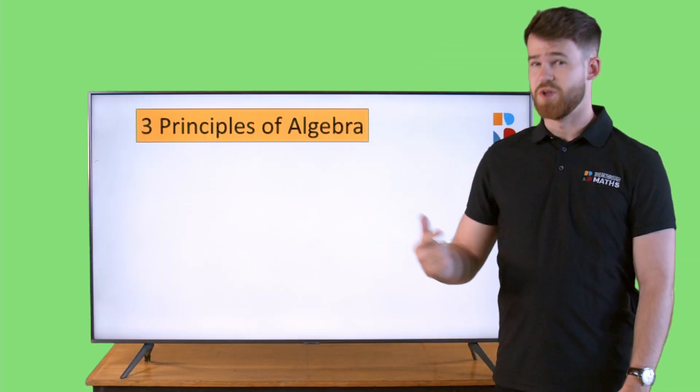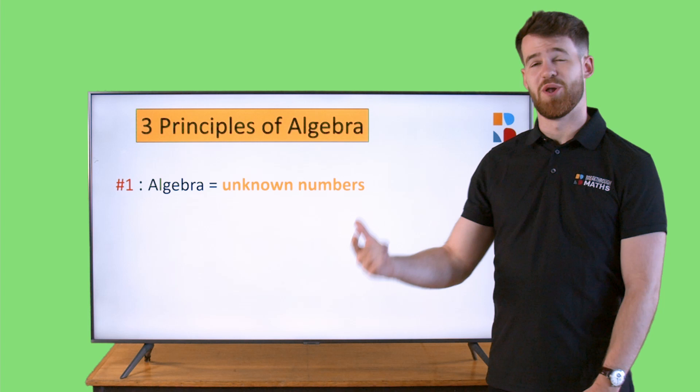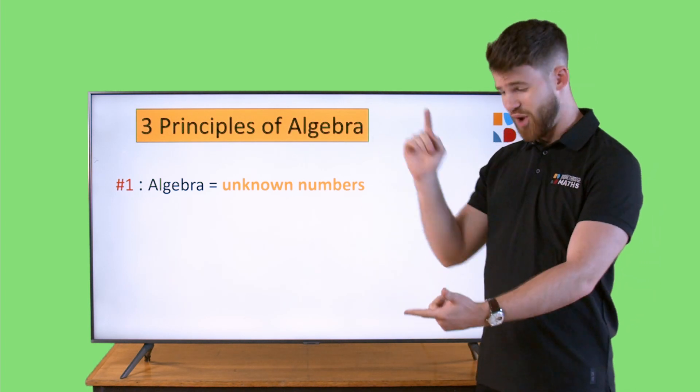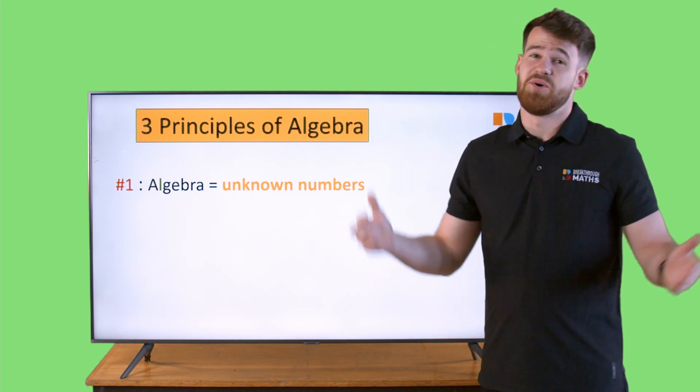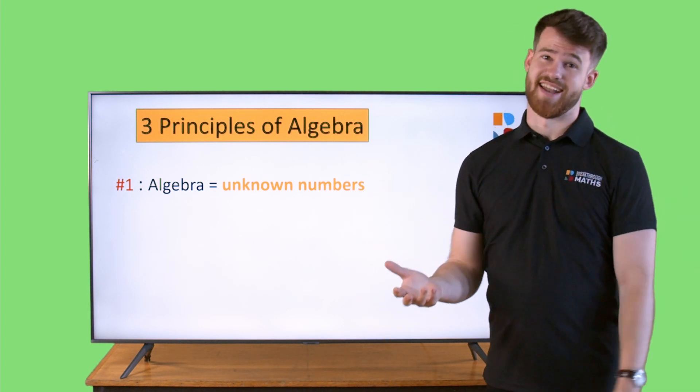So we've learned three principles of algebra here. Number one, algebra is all about the unknown. It's all about your x's, your y's, your a's, your b's. It's all the same as apples and bananas.